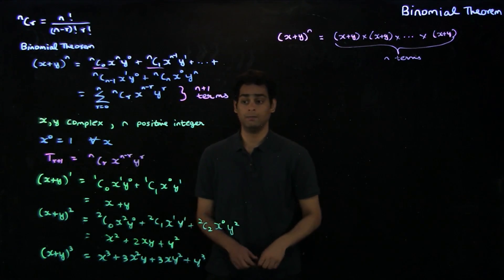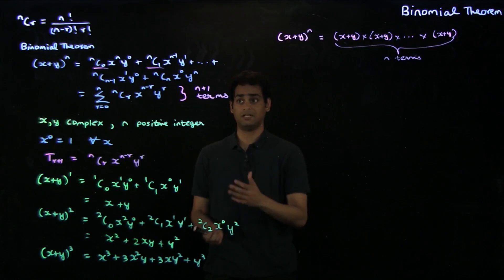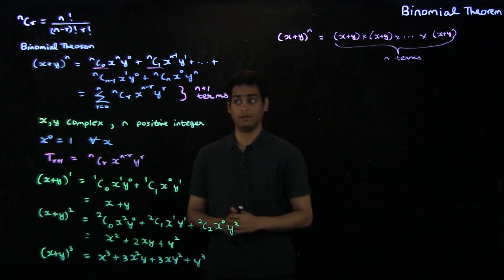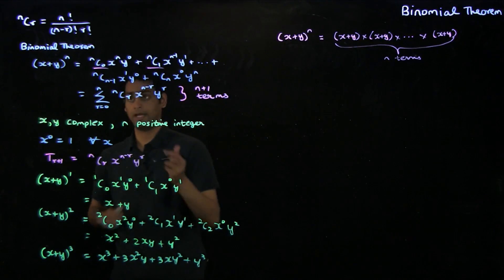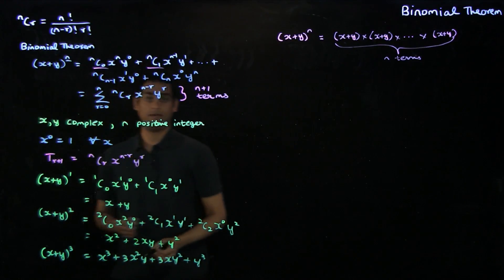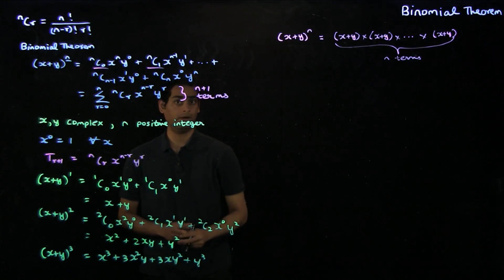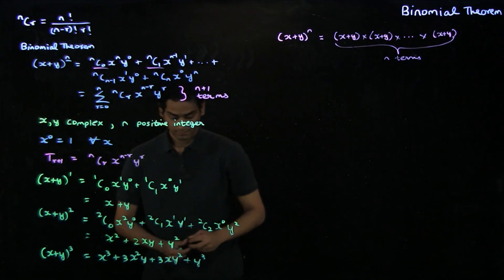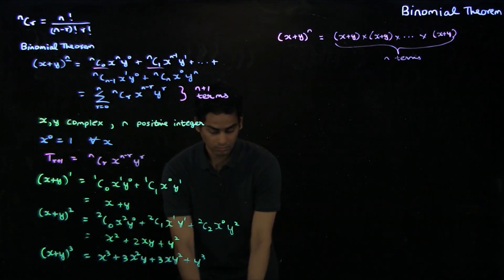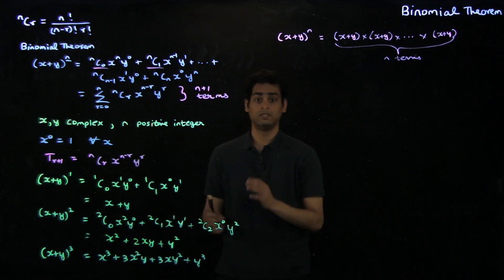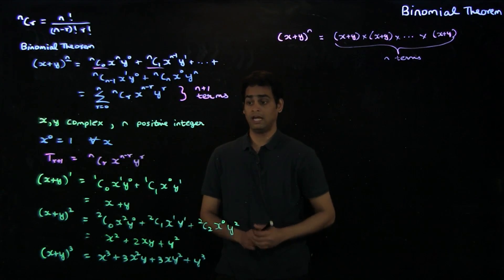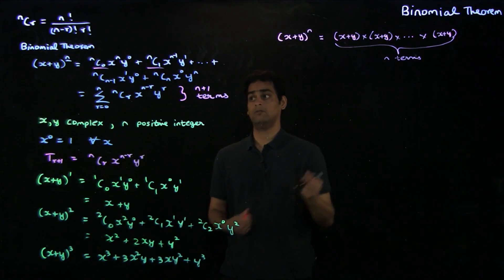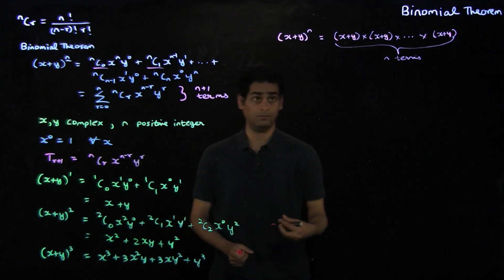As mentioned previously, there are generalizations for the binomial theorem for the case when this exponent n is not necessarily a positive integer, but when it can be any real number. You can derive several related results by playing around with the general result of the binomial theorem.